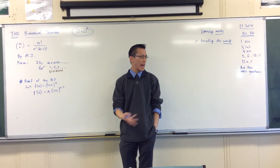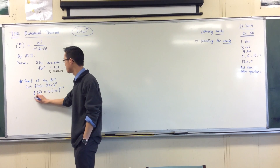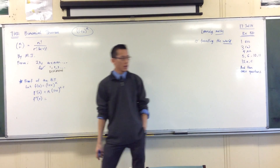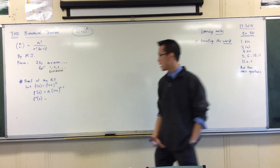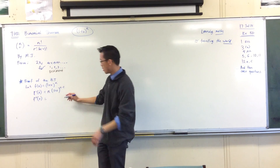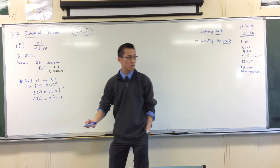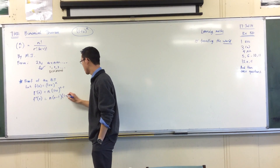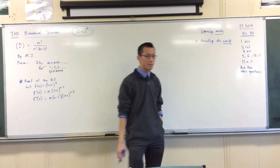Let's keep going and see if we can work out a pattern. If I differentiate again to get a second derivative, I repeat the process — that n is hanging out there, and I now multiply by the new power. So I get n times (n minus 1), and the power drops down one more time.